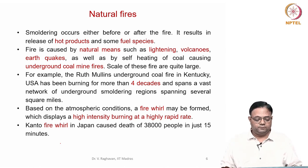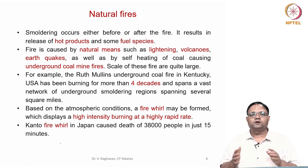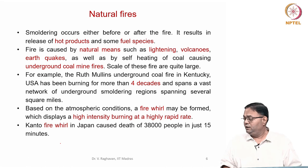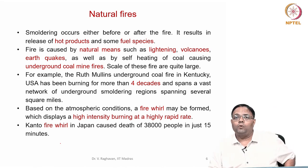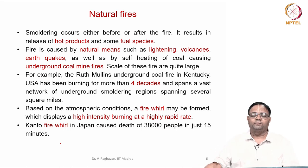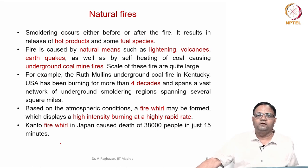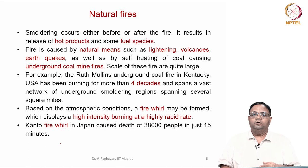Smoldering can occur before or after flaming fire. For example, in an enclosure fire, a dustbin with papers may first catch fire, then ignite a nearby chair. Once flaming combustion completes, hot char surfaces can get oxygen and smoldering can occur. Alternatively, smoldering can start first — a char surface burning unnoticed — and then ignite another commodity. In both cases, hot products are released.